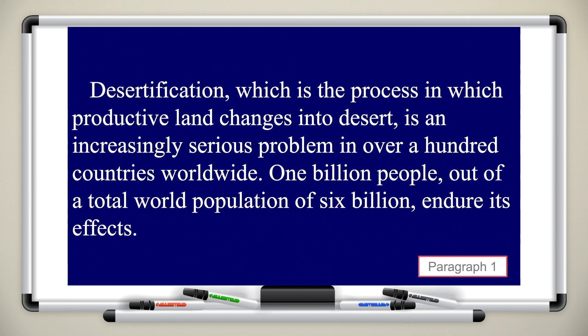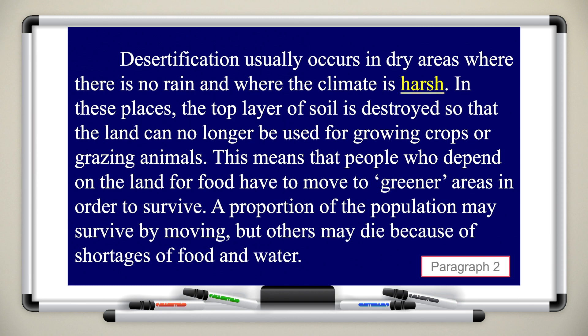We will start with paragraph one. Desertification, which is the process in which productive land changes into desert, is an increasingly serious problem in over a hundred countries worldwide. One billion people out of a total world population of six billion endure its effects. Desertification usually occurs in dry areas where there is no rain and where the climate is harsh. In these places, the top layer of soil is destroyed so that the land can no longer be used for growing crops or grazing animals. This means that people who depend on the land for food have to move to greener areas in order to survive.